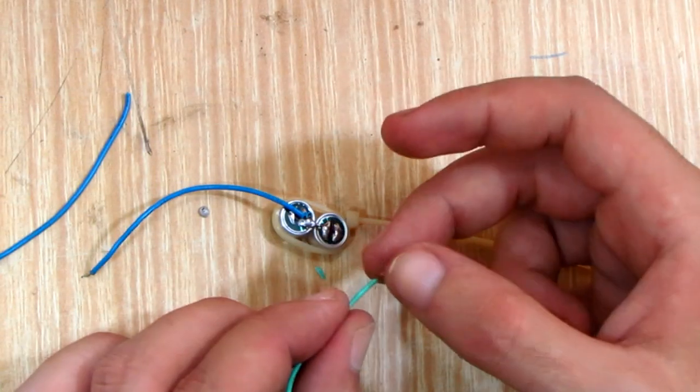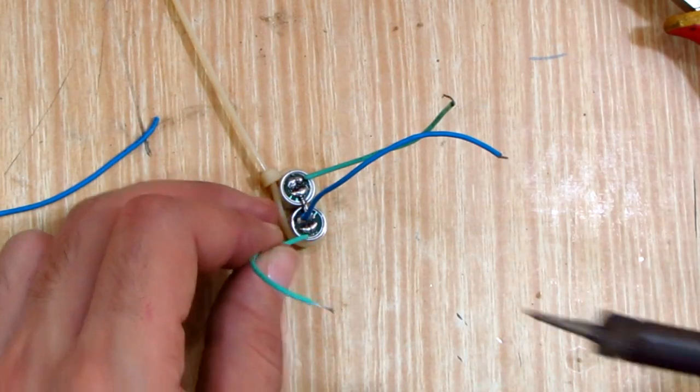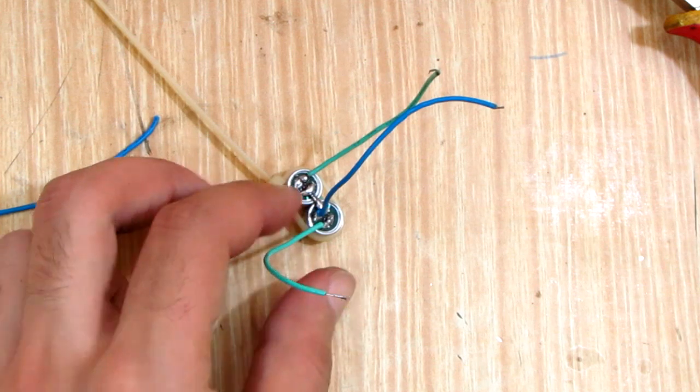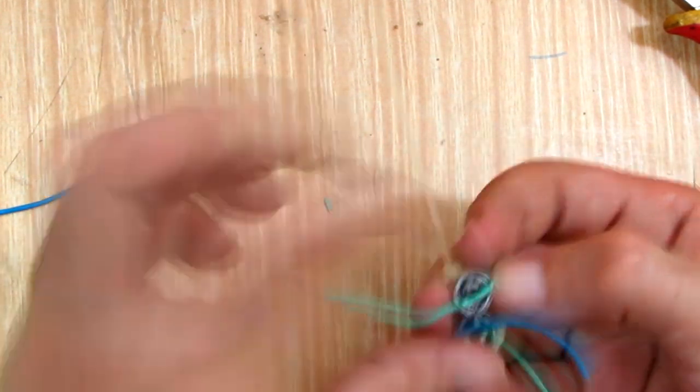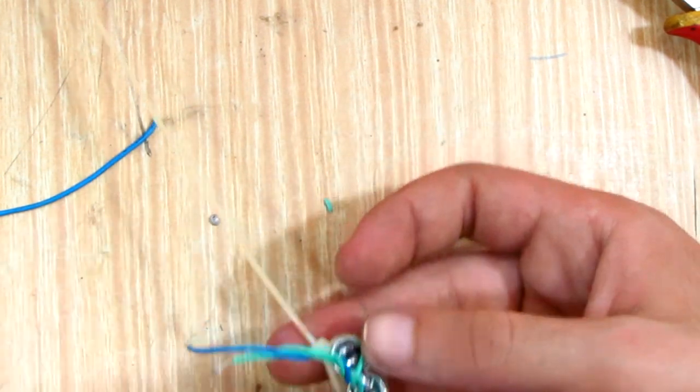Then I cut two other wire pieces and soldered them to the positive terminals. I twisted the three wires together to make them manageable and to reduce noise.